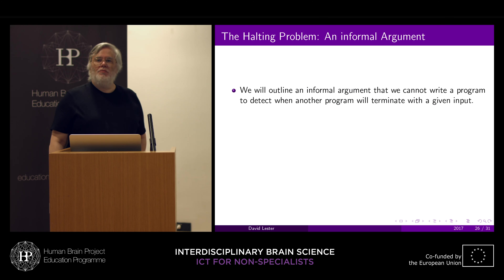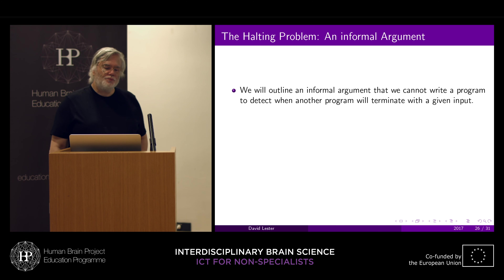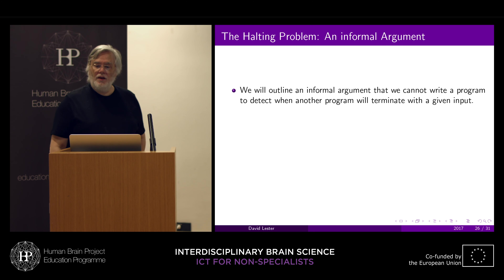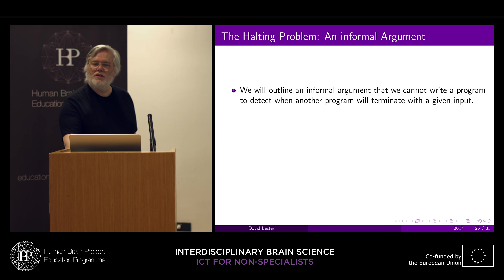Now we come to the halting problem. I'm going to make an informal argument here, which is quite complicated enough. Basically, the argument is very similar to other logical arguments where you try to generate contradictions and paradoxes. This problem is related quite strongly to the liar paradox — in its modern form: 'this sentence is a lie.' What we're talking about is a self-referential form where you cross-refer a statement and its truth value, mixing those two things up.